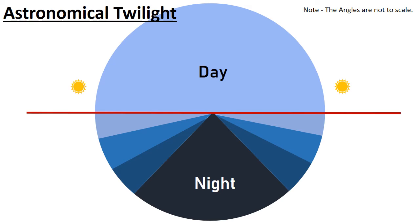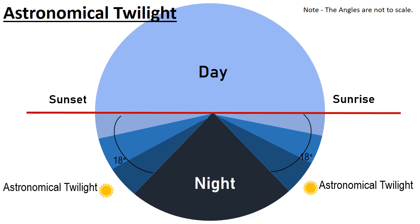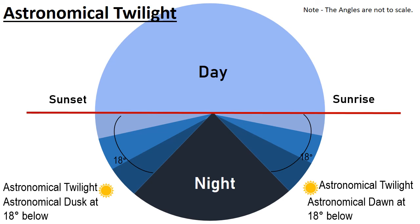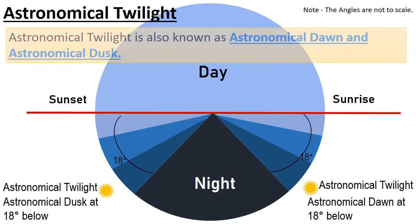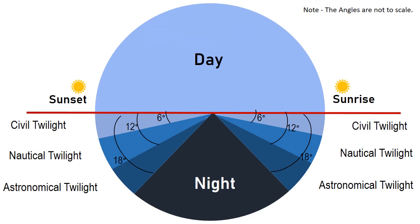Now we are talking about astronomical twilight. At the time of sunrise and sunset, astronomical twilight happens when the sun is less than 18 degrees below the horizon. Astronomical dawn is the moment when the center of the sun is 18 degrees below the horizon in the morning, and astronomical dusk is the equivalent in the evening. During astronomical twilight, many stars can be seen in the sky. You have now seen the three categories of twilight: civil, nautical, and astronomical.